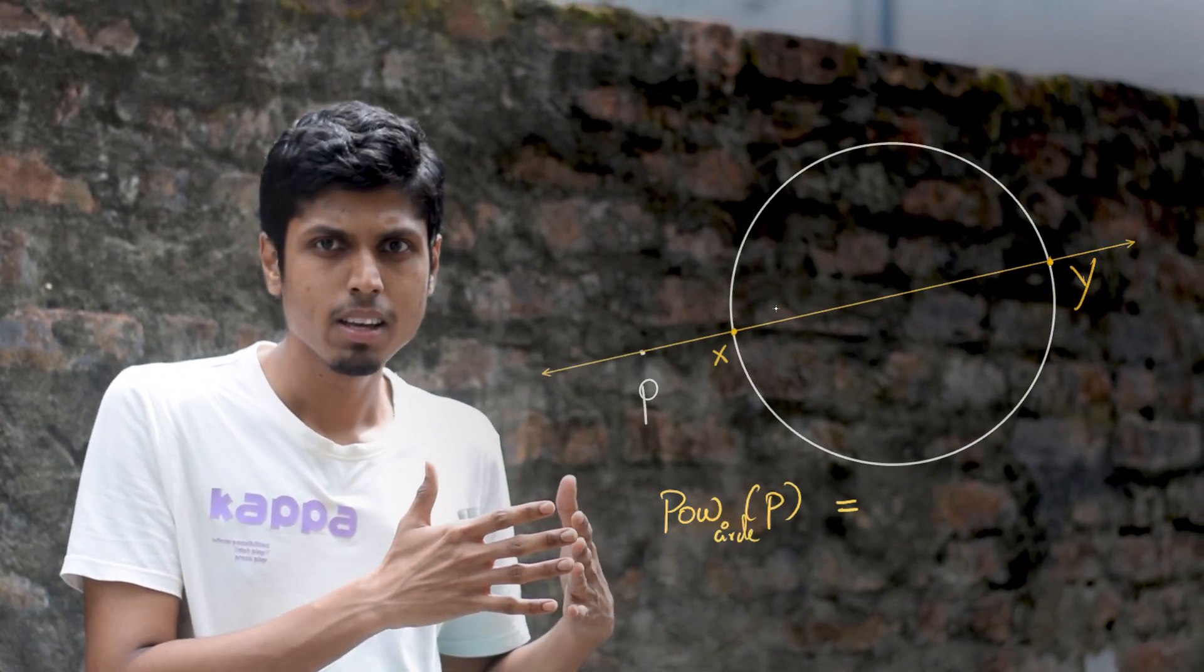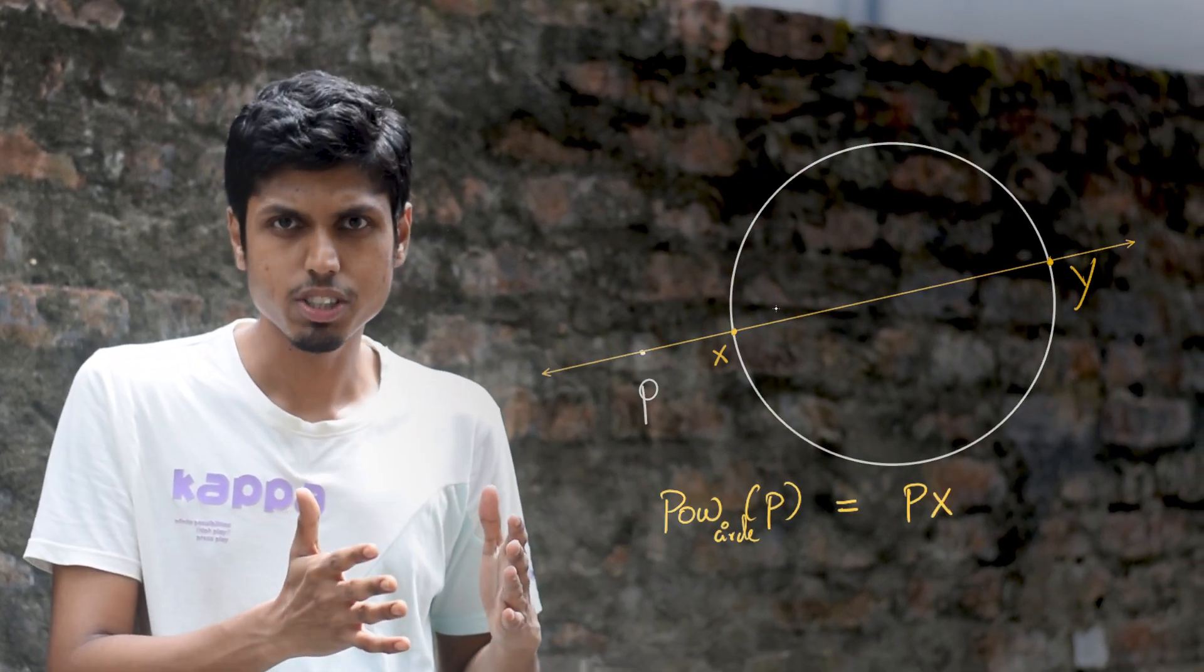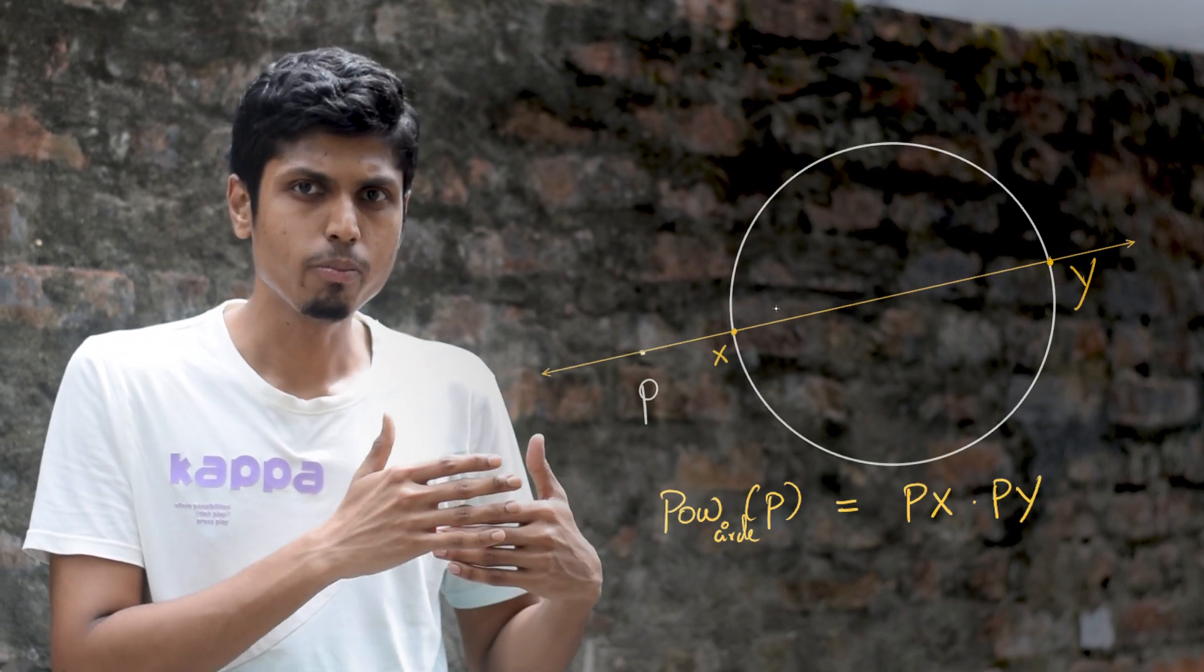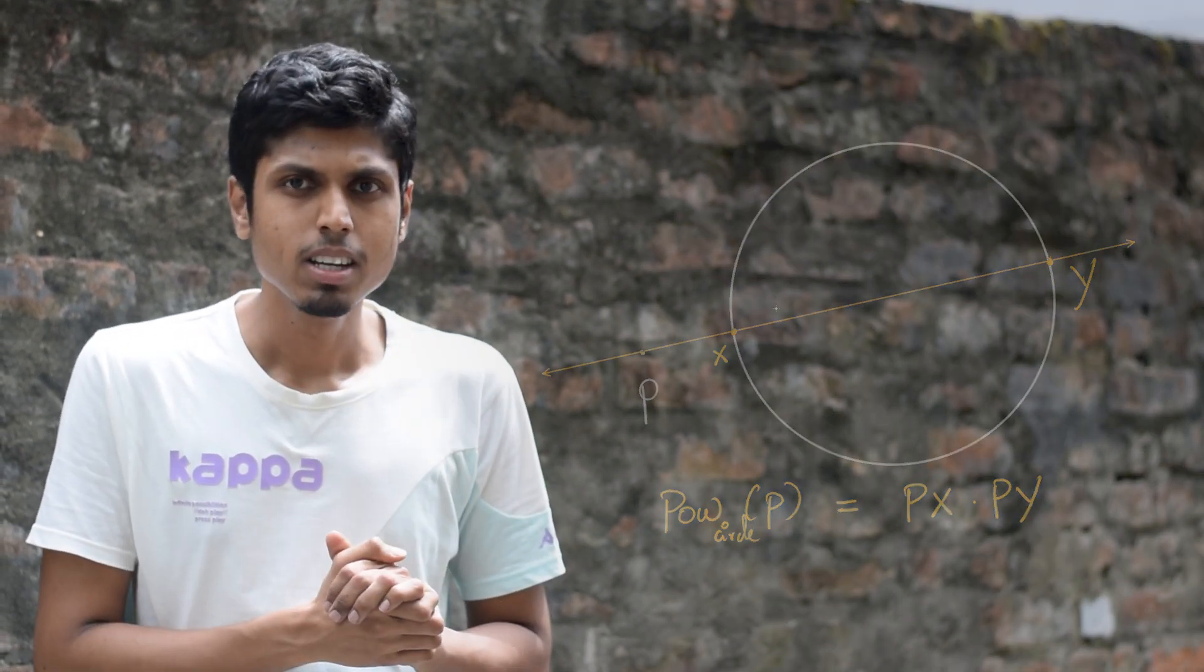Power of this point P with respect to the drawn circle is defined to be PX times PY. Though this quantity is not very trivial, we are going to see its multiple purposes and properties, and solve one beautiful problem at the end by applying this theorem. This will be really helpful for students preparing towards IOQM and AMC.